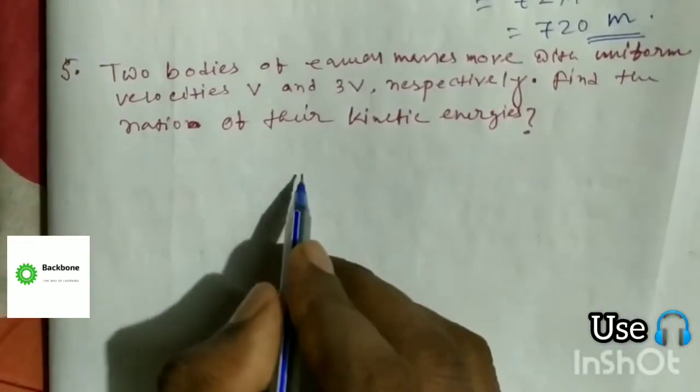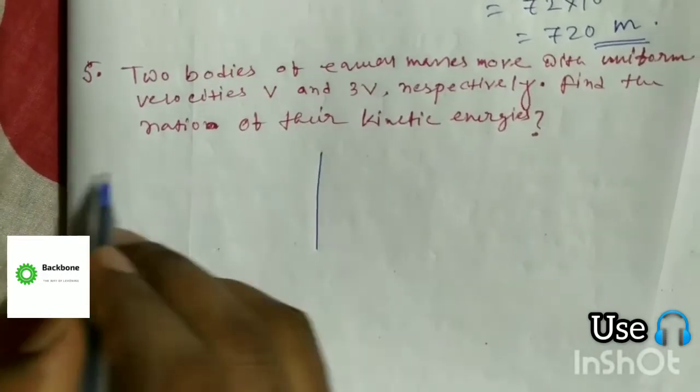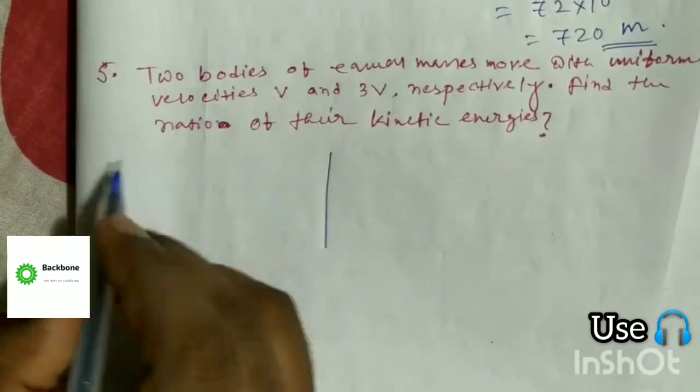Here, both bodies have equal mass. Since kinetic energy equals 1/2 M V squared, the ratio of kinetic energies is V squared to 9V squared.